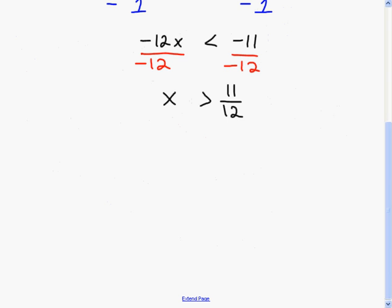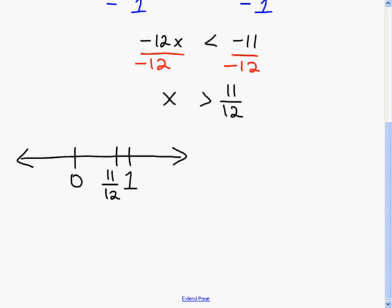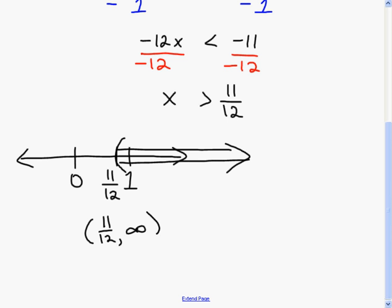Graphing x is greater than 11/12: on the number line, 11/12 is between 0 and 1, closer to 1 since 12/12 would be 1. Put a mark there, use a parenthesis since it's strict inequality, and shade everything to the right. In interval notation, that's parenthesis 11/12 to infinity. Watch your signs — it's the sign of the number you divide by that determines whether you reverse the inequality.